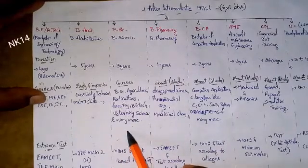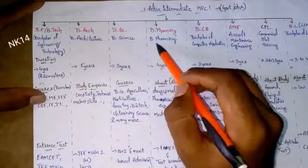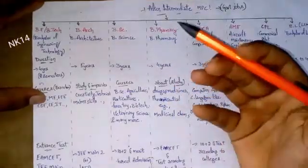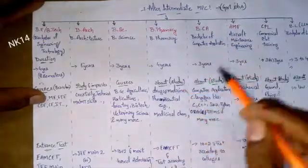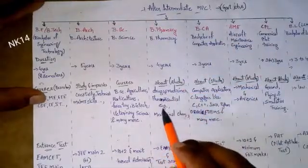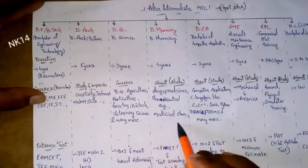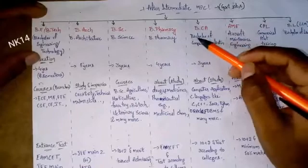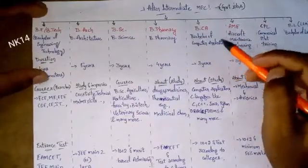Next is B.Pharmacy — Bachelor of Pharmacy — with a duration of four years. In this you can study about drugs, medicines, pharmaceutical engineering, and medicinal chemistry. Next is BCA — Bachelor of Computer Applications — with a duration of three years.